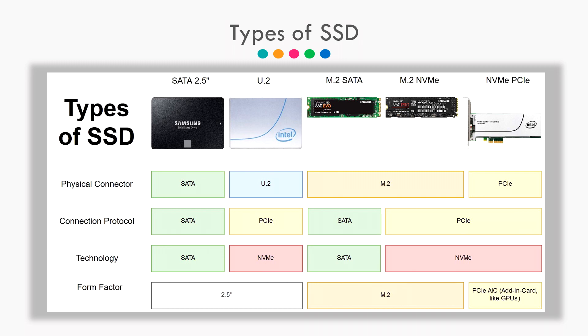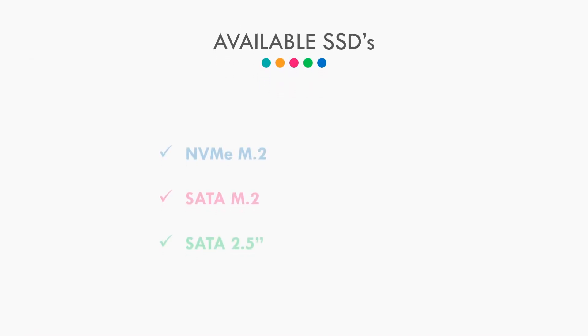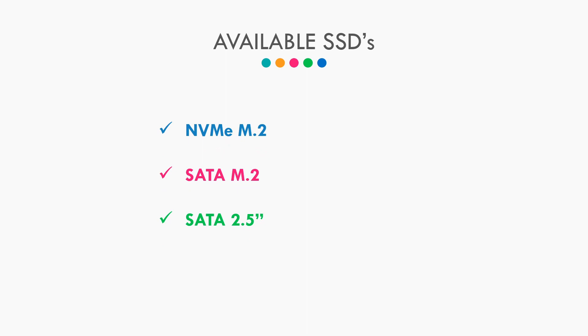But the thing is, for regular consumers only 3 kinds of SSDs are available, which are NVMe M.2, SATA M.2, and 2.5 SATA. So let's see these 3 types of SSD one by one.